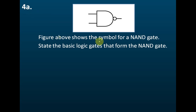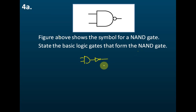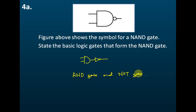Question 4a. A figure above shows the symbol of a NAND gate. State the basic logic gates to form the NAND gate. A NAND gate is built from an AND gate with a NOT gate in front. So the basic gates to build this NAND gate are the AND gate and NOT gate. We use an AND gate and a NOT gate to build the NAND gate.